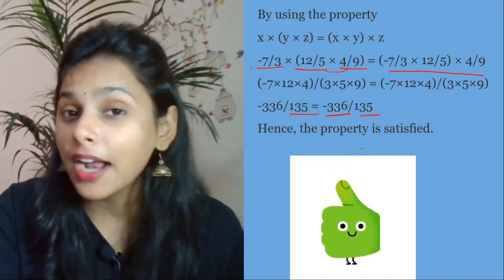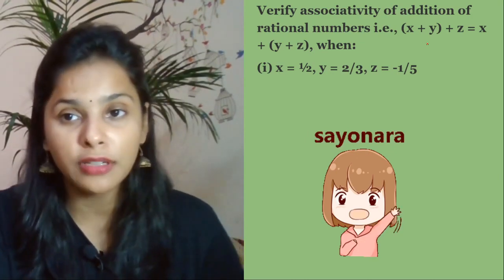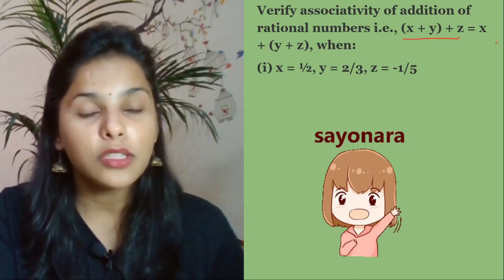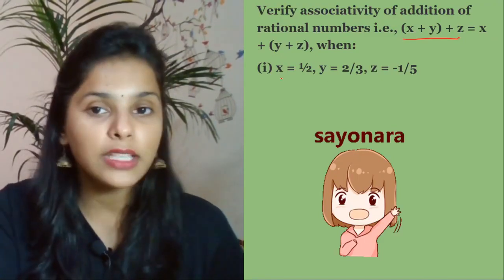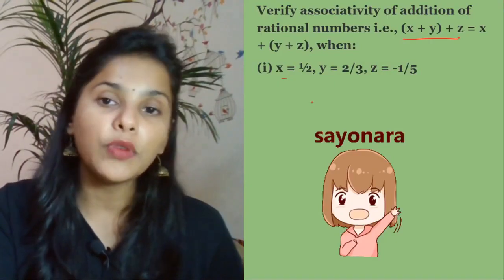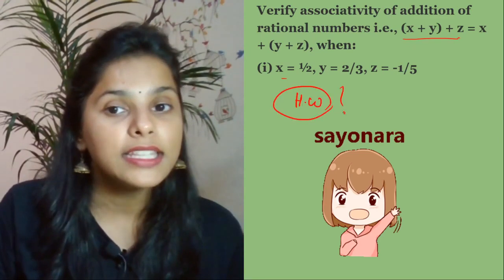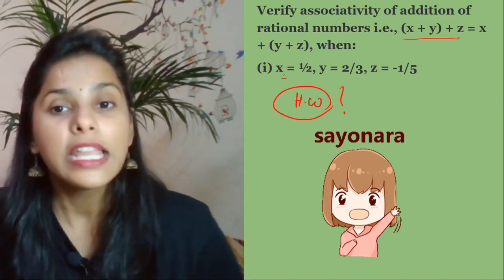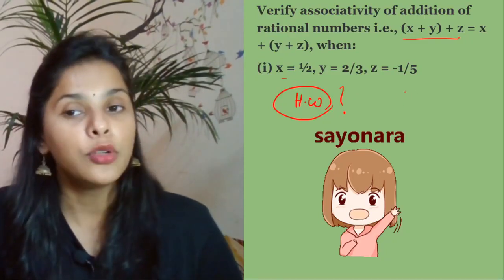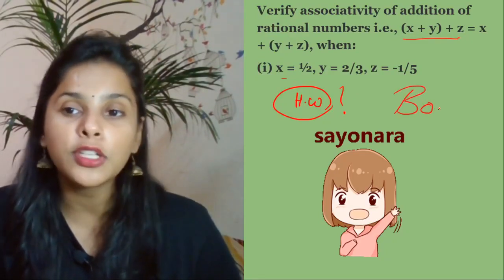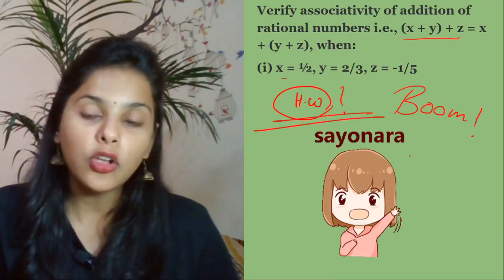Next question: verify the associativity of addition of rational numbers — that is, x + (y + z) = (x + y) + z — where the values of x, y, z are given. This is a challenge question: simply put the values in and solve LHS and RHS. Let me know in the comment section if you were able to boom this correctly.